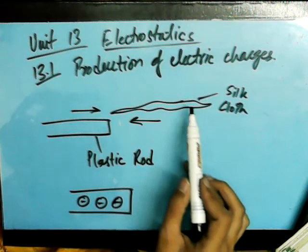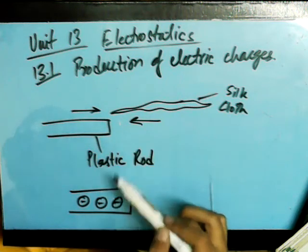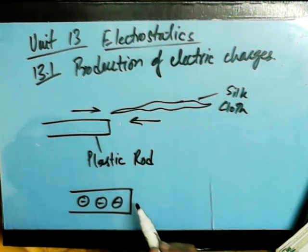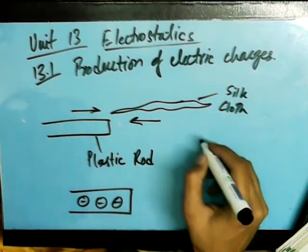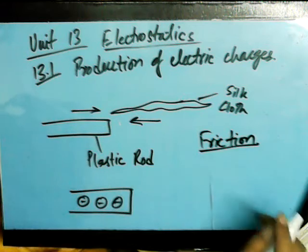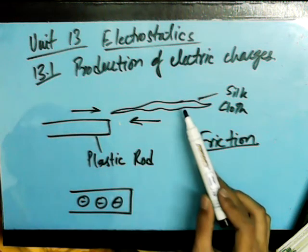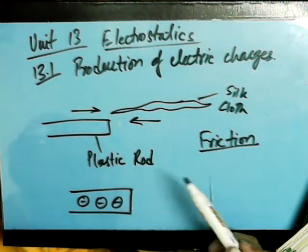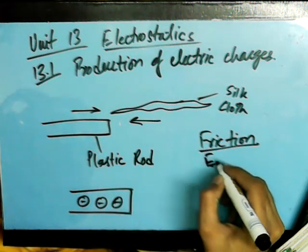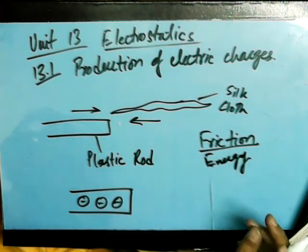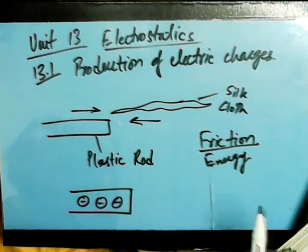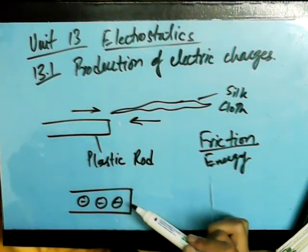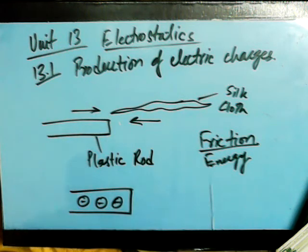What has happened is that the electrons from the silk cloth have jumped towards the plastic rod, and because of the friction, these charges are now sustained. This is how we produce charge, and the phenomenon we are using is friction. Friction provides enough energy for the electrons of the silk cloth to jump from it and cling on to the plastic rod, and hence the plastic rod is now charged.